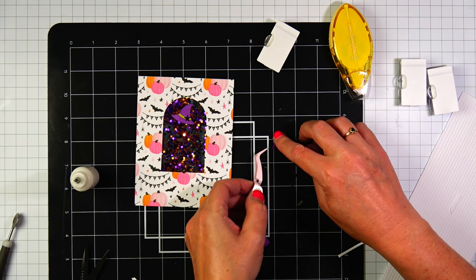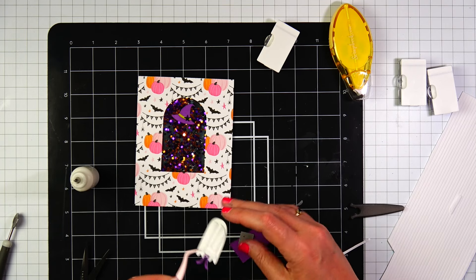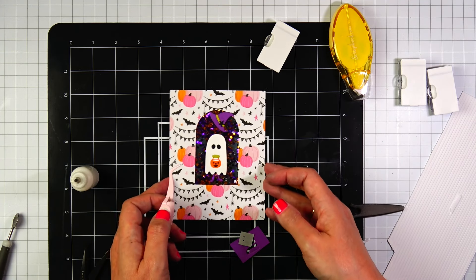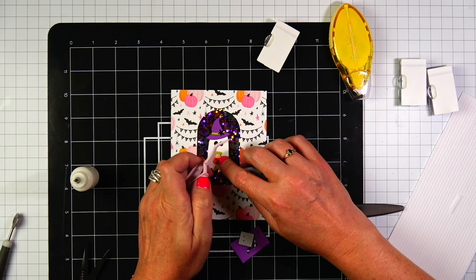But before we do, I did realize those black legs that were on the ghost just blend too much into the background. So I did die cut purple legs and I'm attaching those to the back of the ghost. And then I'm going to use one millimeter foam strips to attach the ghost to the window.